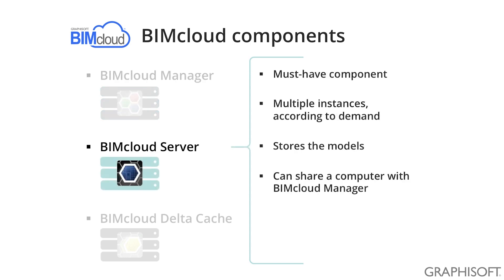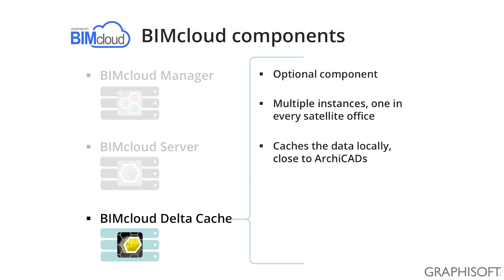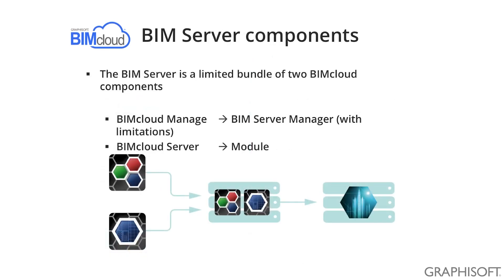BIMcloud Servers are the components that work together with ARCHICAD while using Teamwork. Multiple BIMcloud Servers can be set up in the office according to the resource needs. This stores the model, and ARCHICAD communicates with the BIMcloud Server every time a model is sent or received. The BIMcloud Delta Cache component optimizes the bandwidth usage in remote offices by caching the model information on the client side. The BIMserver is a simplified bundle of a management and a model component — the user cannot see them separately; the installer installs them in a single step.